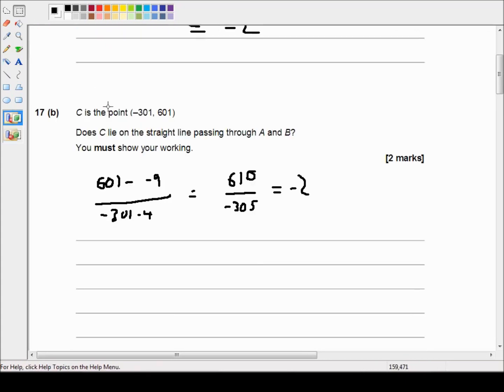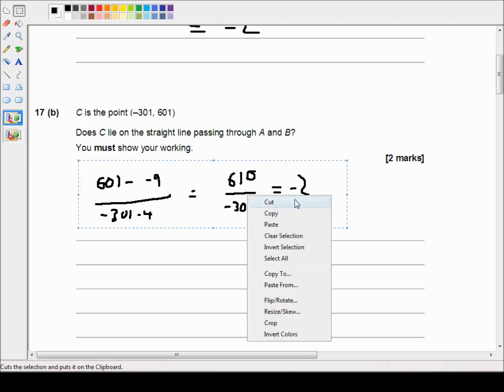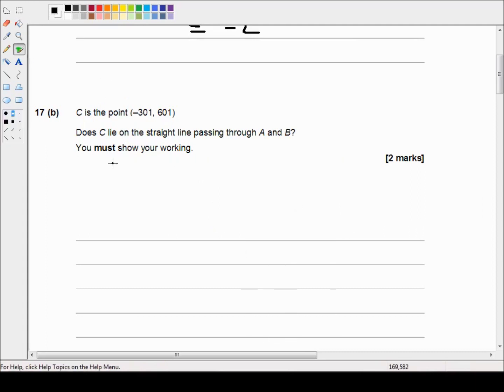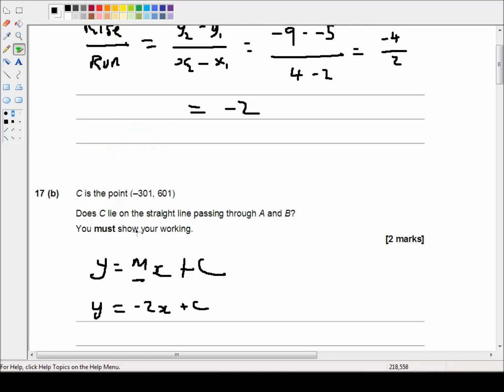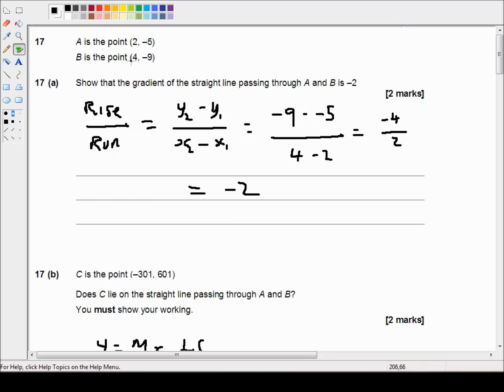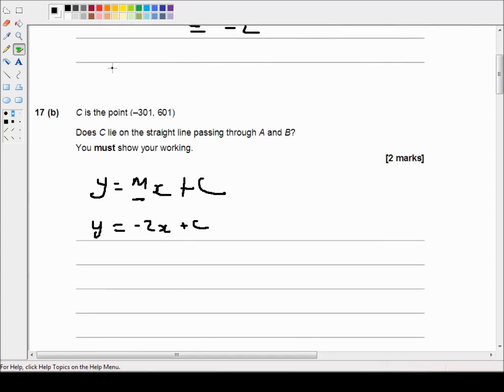The alternative method would be the slightly more traditional method of solving for y equals mx plus c. So what we could have said is y equals mx plus c, and we know that m is -2, so y equals -2x plus c. We can now use the points on this line, we could use any one - we could use (2, -5) or (4, -9), it doesn't matter.